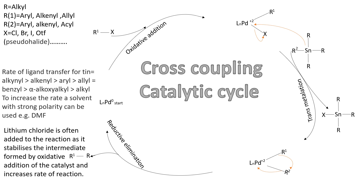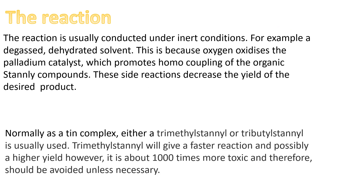If you look to the middle left, you can see that the rate of this reaction is affected by the R group, with alkyl being the least effective and aryl being the most effective. To increase the rate, a solvent with strong polarity can be added, such as DMF. Lithium chloride is often added to the reaction as it stabilizes the intermediate formed by oxidative addition of the catalyst, which can also increase the rate. This reaction is usually done under inert conditions — for example, using a degassed, dehydrated solvent — because oxygen oxidizes the palladium catalyst, which promotes homo-coupling of the organotin compounds, decreasing yield.